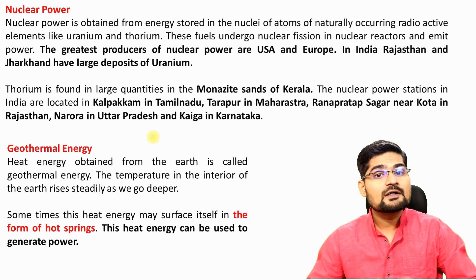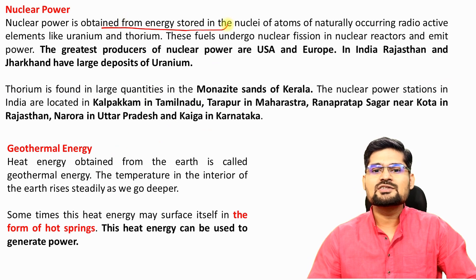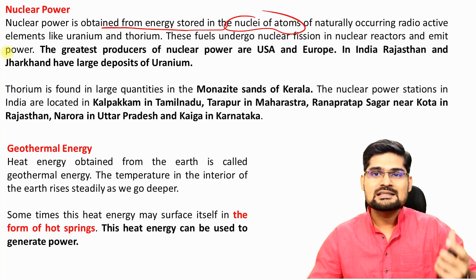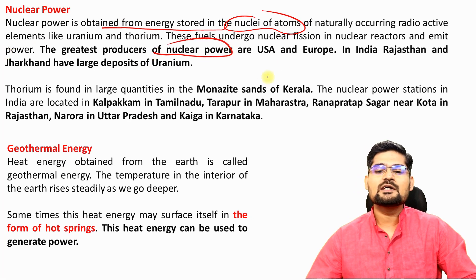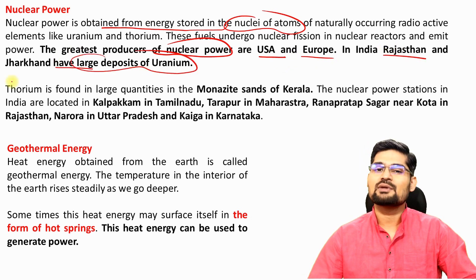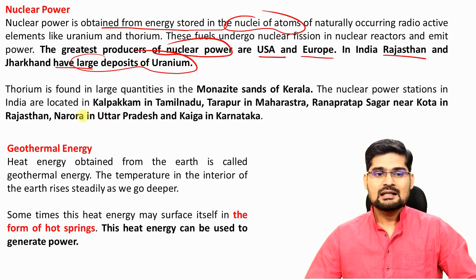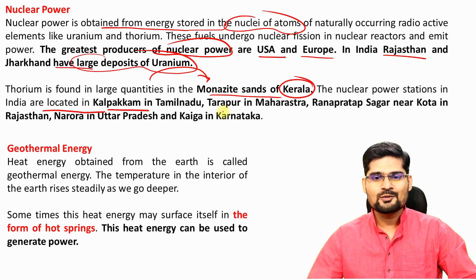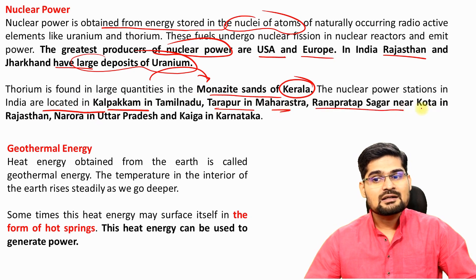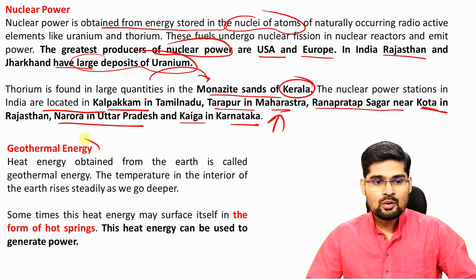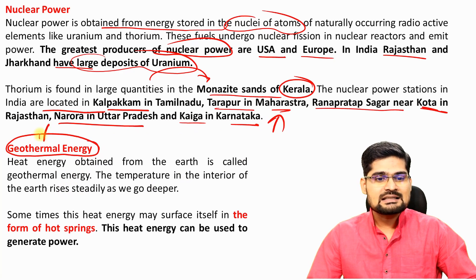Nuclear power is obtained from energy stored in the nuclei of atoms through controlled nuclear reactions. The greatest producer of nuclear power in the world is the USA and Europe. In India, Rajasthan and Jharkhand have large deposits of uranium useful for nuclear power, and thorium is found in large quantities in monazite sands of Kerala. Nuclear power stations in India are located at Kalpakkam in Tamil Nadu, Tarapur in Maharashtra, Rana Pratap Sagar near Kota in Rajasthan, Narora in Uttar Pradesh, and Kaiga in Karnataka.